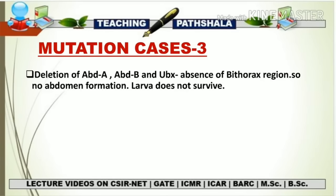The third mutation case involves deletion of Abdominal-A, Abdominal-B, and Ultrabithorax genes — all three members of the Bithorax Complex. When these three genes are deleted or lose normal function, there is an absence of the bithorax region: no abdomen forms, and the larva does not survive because the abdomen is essential for survival.